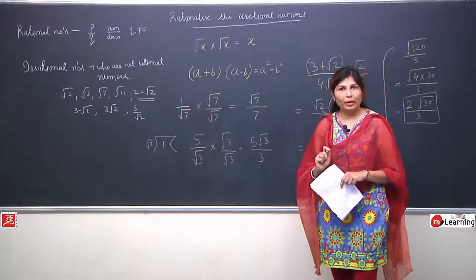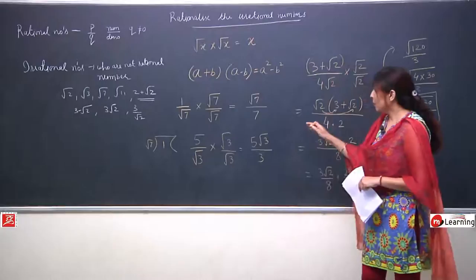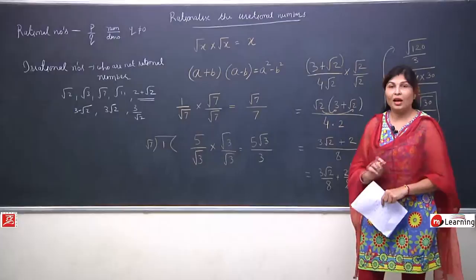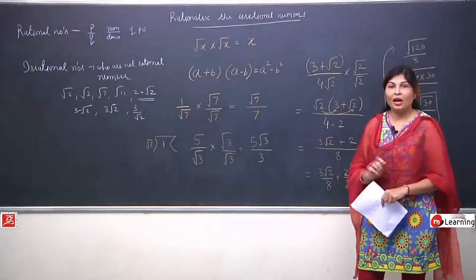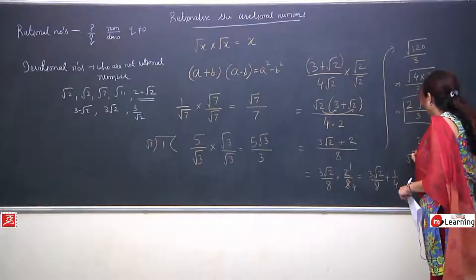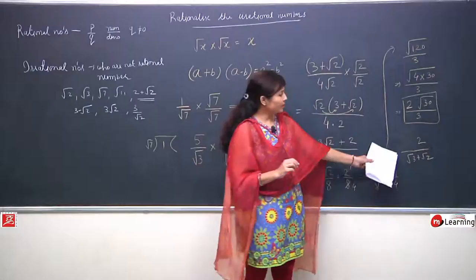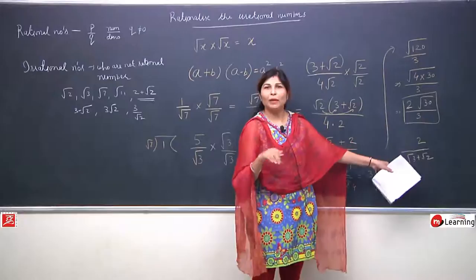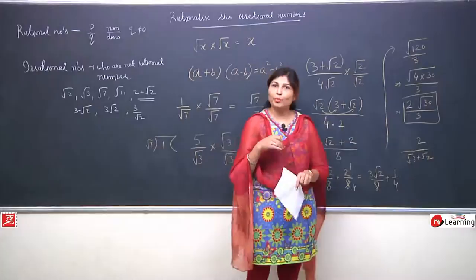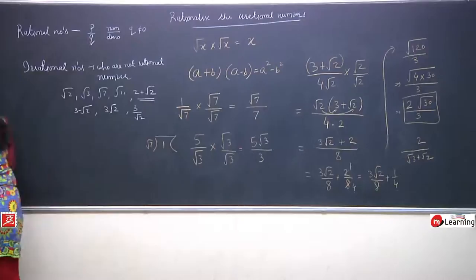Friends, we have learned a very important topic in real numbers - rationalization of irrational numbers. Now we took simple numbers which had no operation between them. But now if a situation comes like 2 by (root 3 + root 2) or root 3 minus root 2, what will we do? This is the next part of rationalization.